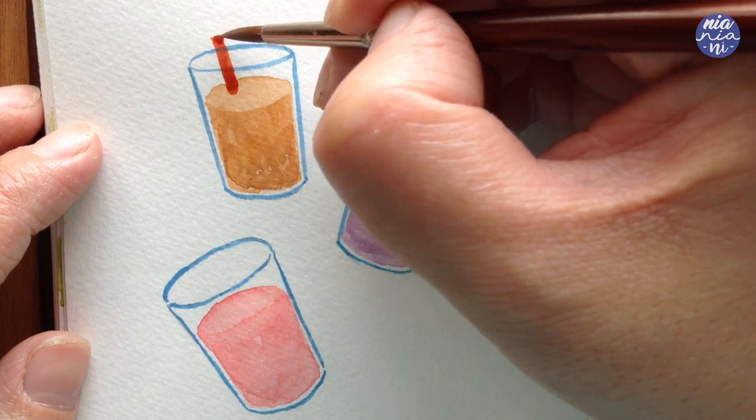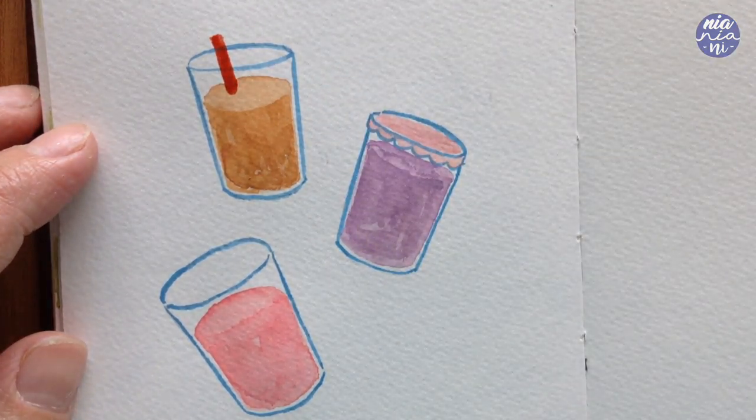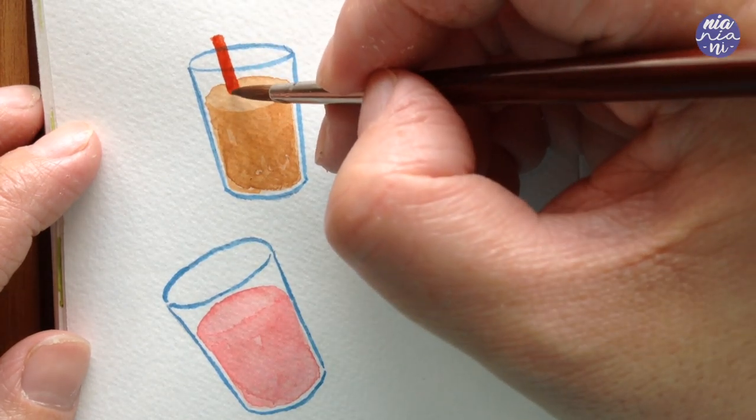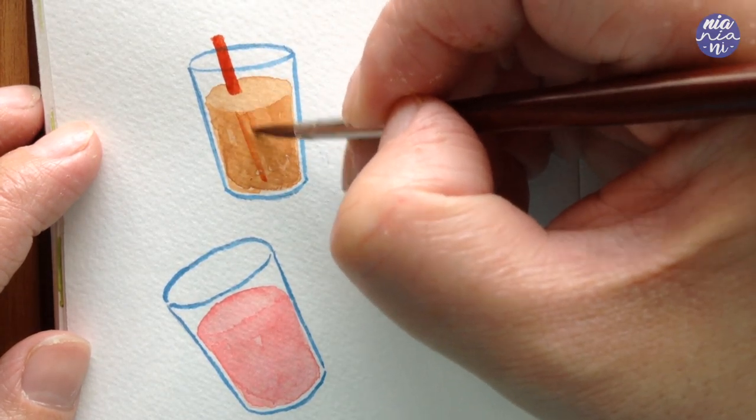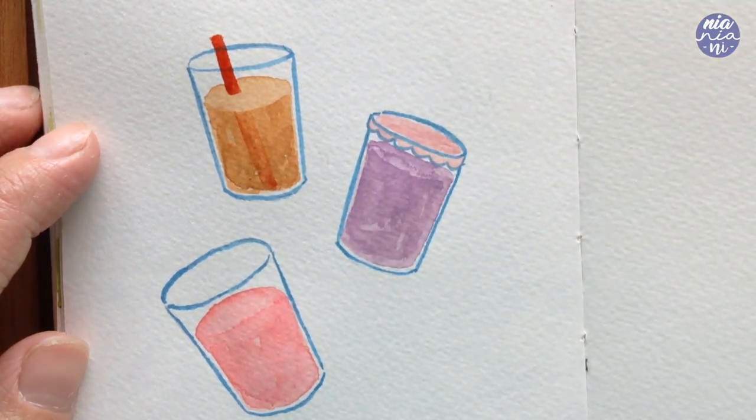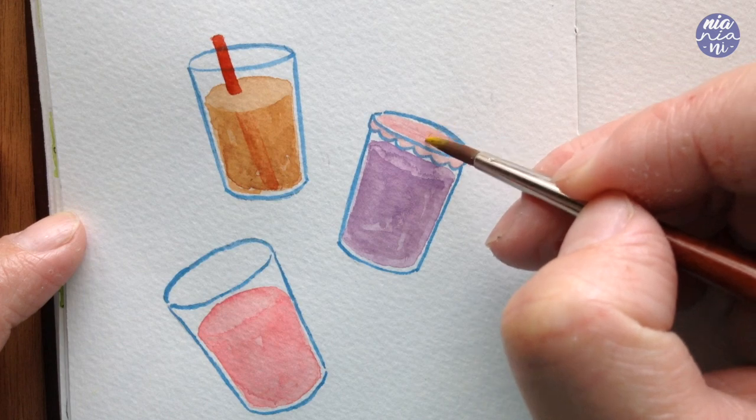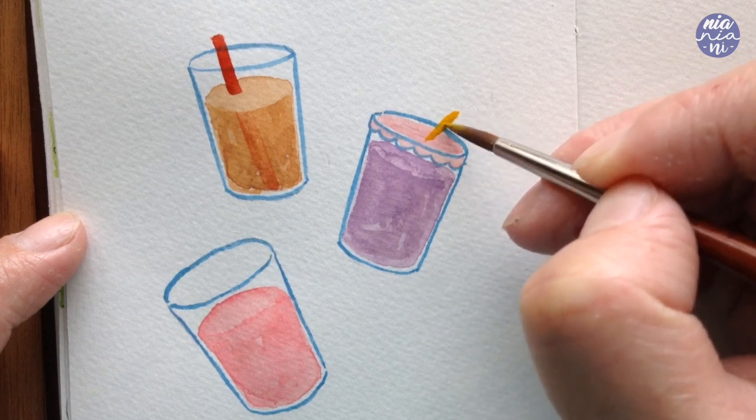I'm going to use single colors for the straw. You can literally pick any color from the palette and use it without mixing. I'm just going to pick colors that I find would suit the color of the drinks and paint the straws, which is just a thick line with the top slightly curved.